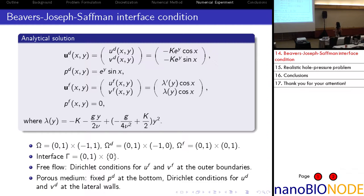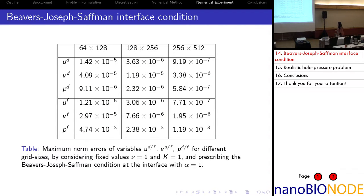Now we come to the numerical experiment part. The first example is an analytical test where exact solutions are given. The Beaver-Joseph-Saffman condition is considered at the interface, and the outer boundary conditions are prescribed accordingly. The table shows the maximum error between the numerical solution and the exact solution for each variable on different grid sizes. We obtain second-order accuracy for all variables except the pressure in the Stokes domain, where first-order accuracy is obtained.